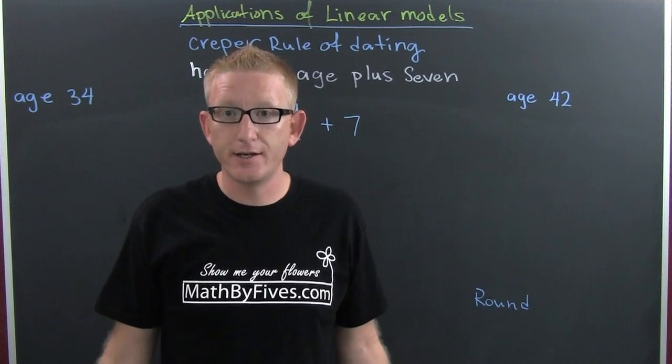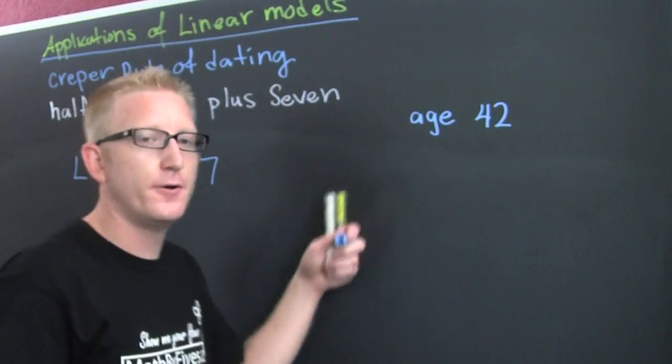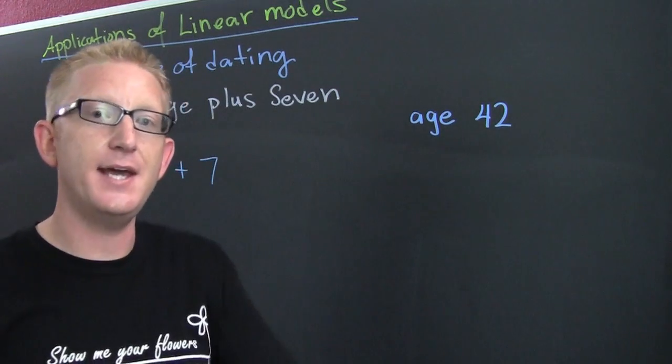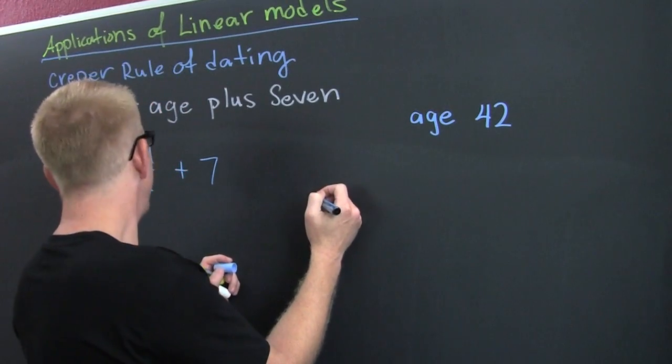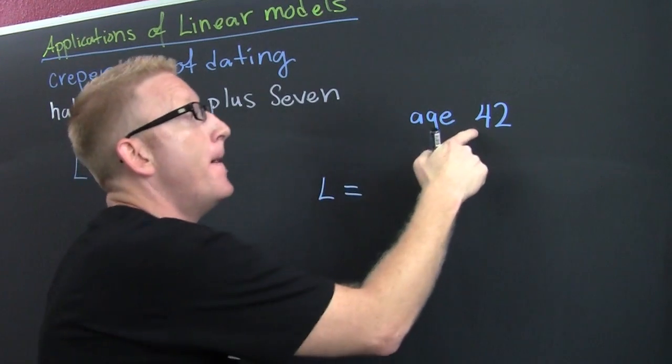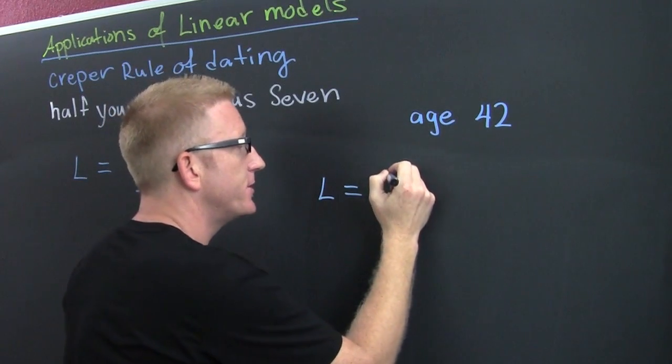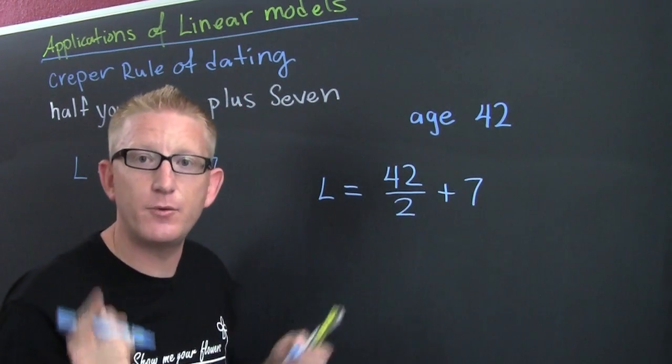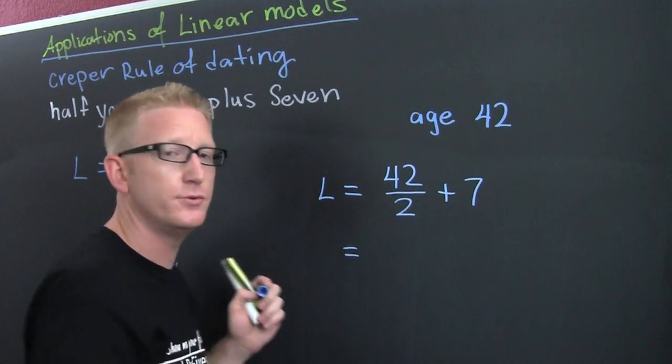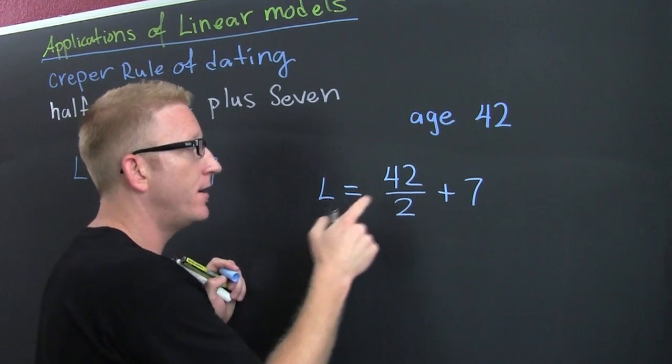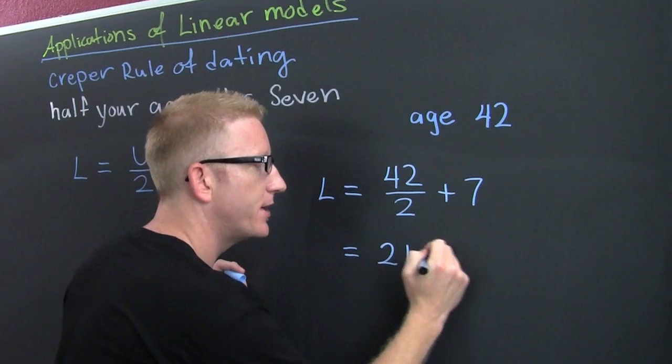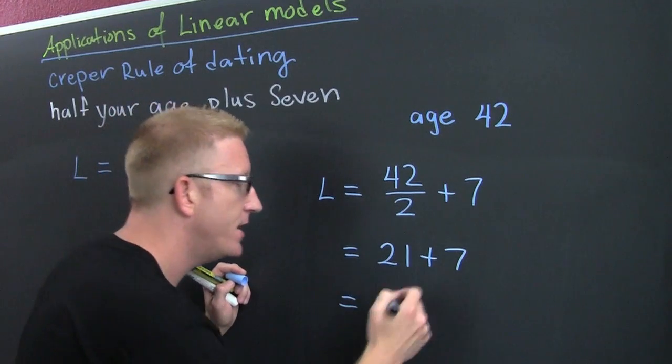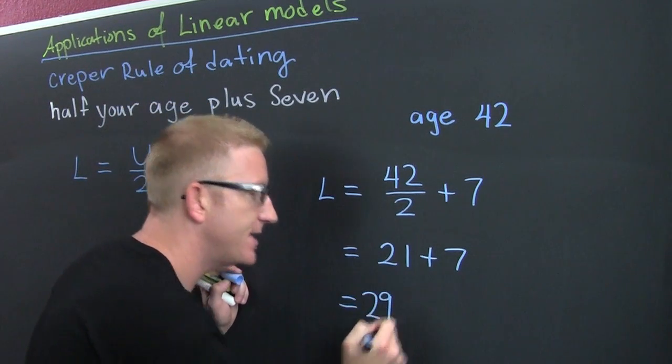Let's say you're 42 years of age and you want to find the lowest age that you can possibly date. We're looking for the lower age, but your age is 42, so then 42 divided by two plus seven. Let's find out what's going to be socially acceptable for you. Half of 42 is 21 plus seven, so we're going to find that that piece of man meat on your arm should be no less than 29 years of age.